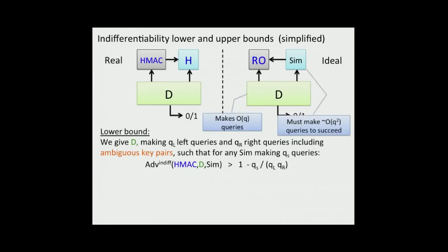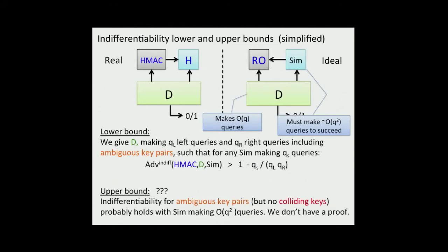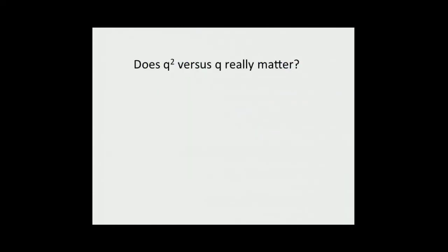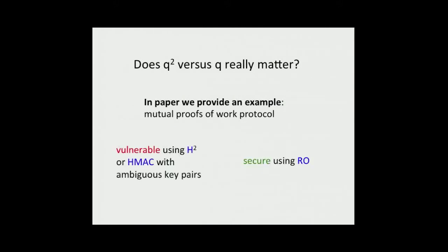For HMAC, we have a similar phenomenon, basically the same type of approach. If you have ambiguous key pairs and you can use them, then you can inflate the number of queries the simulator must make. We note that right now we don't have an upper bound that is analogous to the H squared upper bound for HMAC, but we suspect that it is possible to prove. You might ask why it doesn't really seem like it should matter much whether Q squared or Q. But in fact, in many settings, this gap can be quite critical. In the paper, we give an example of a setting in which this threshold is sharp. It's vulnerable using H squared or HMAC, even with the underlying component totally secure, but secure instead if you had just used a random oracle by itself. This shows a sharp gap between the security of using these constructions and a random oracle.